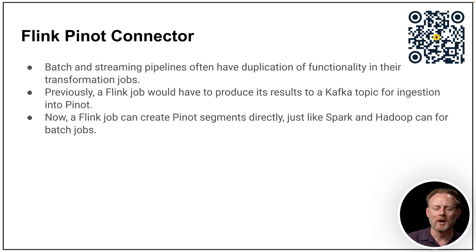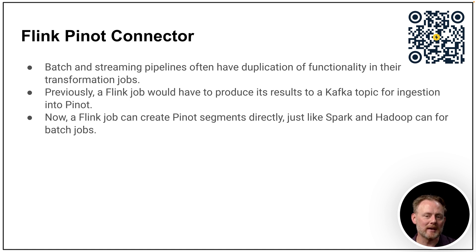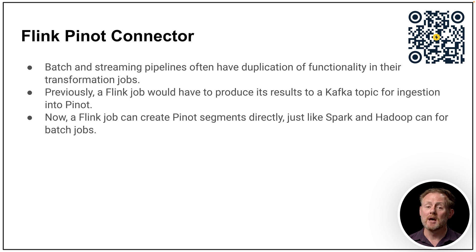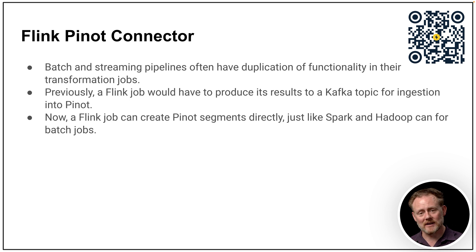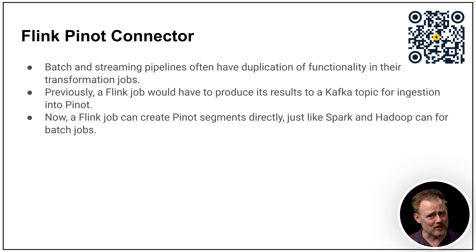Prior to 0.11, with a Flink job consuming from multiple Kafka topics, you would have had to output back to a Kafka topic because that was the only way to get into a real-time table. Now with the Flink connector, Flink can produce effectively directly to Pinot without that intermediary Kafka topic. So if you've got a batch flow and a real-time flow, life has gotten a little easier because you're not round-tripping back to Kafka before coming into Pinot.